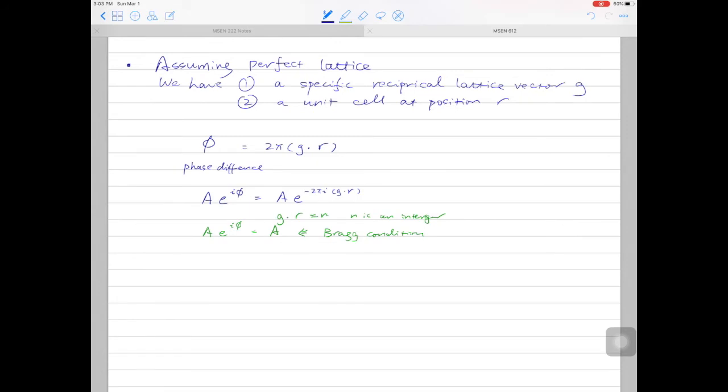We can assume each unit cell in the column scatters the same amplitude. So we can write An, the total amplitude to be scattered, is equal to sigma n fn. This is the structure factor. Multiply by e to the power of minus 2πi g·r.